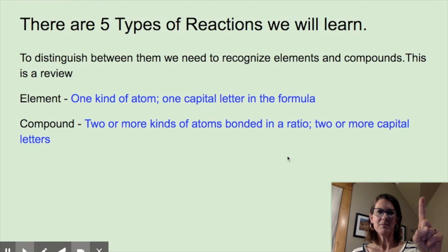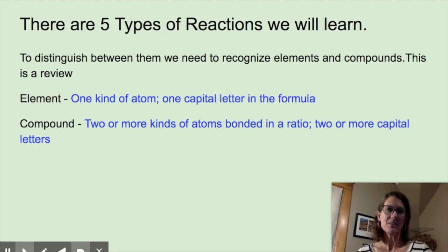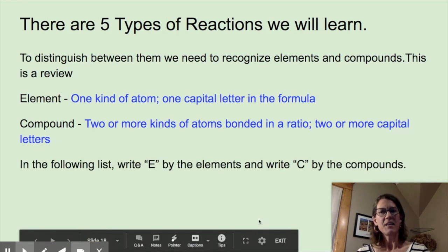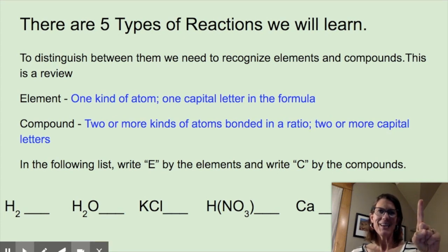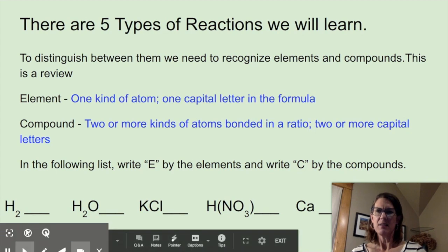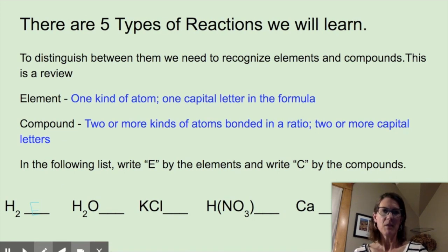So, element, compound. Two elements, one compound. You say it with me. Two elements, one compound. You can pause here and write down the blue definitions on your note sheet. Then, in the following list, write E by the elements and write C by the compounds. So, here's the list. I'm looking at this H2. And there's a little two, but it's only one capital letter. So, even though that means two H's bonded, one capital letter, one kind of atom, means it's an element. So, one capital letter element would write an E in this spot. Go ahead and finish the rest of those and pause here to do that.